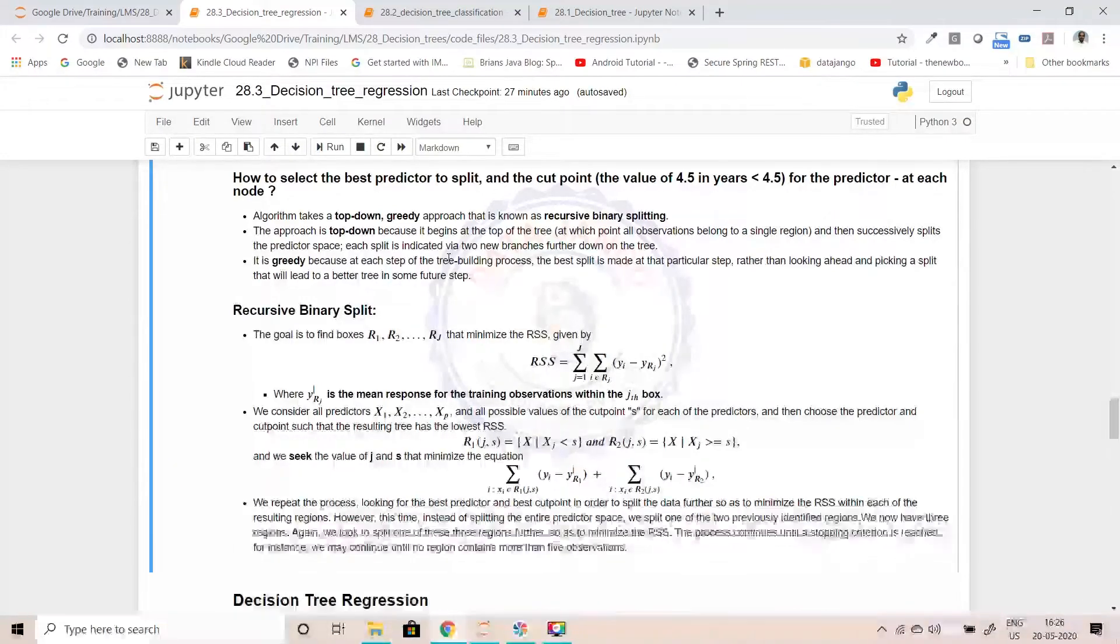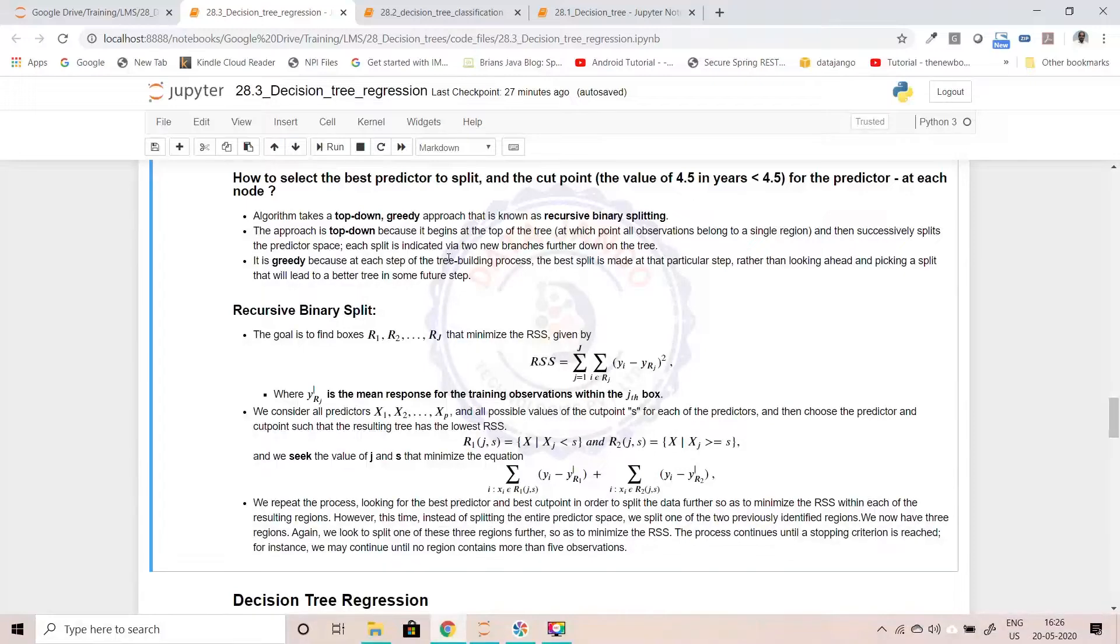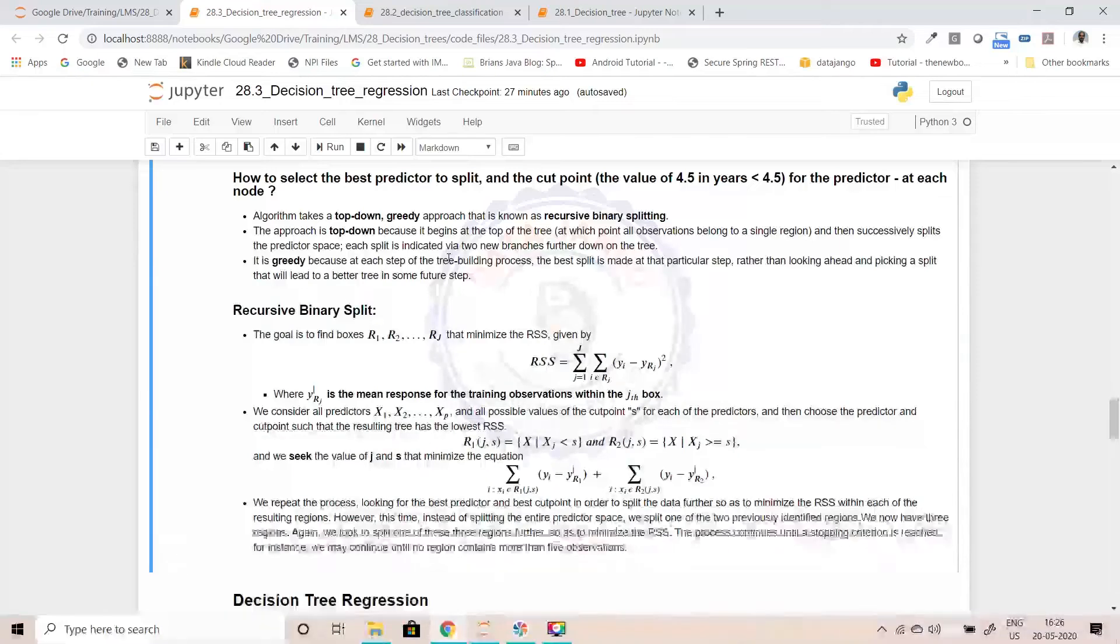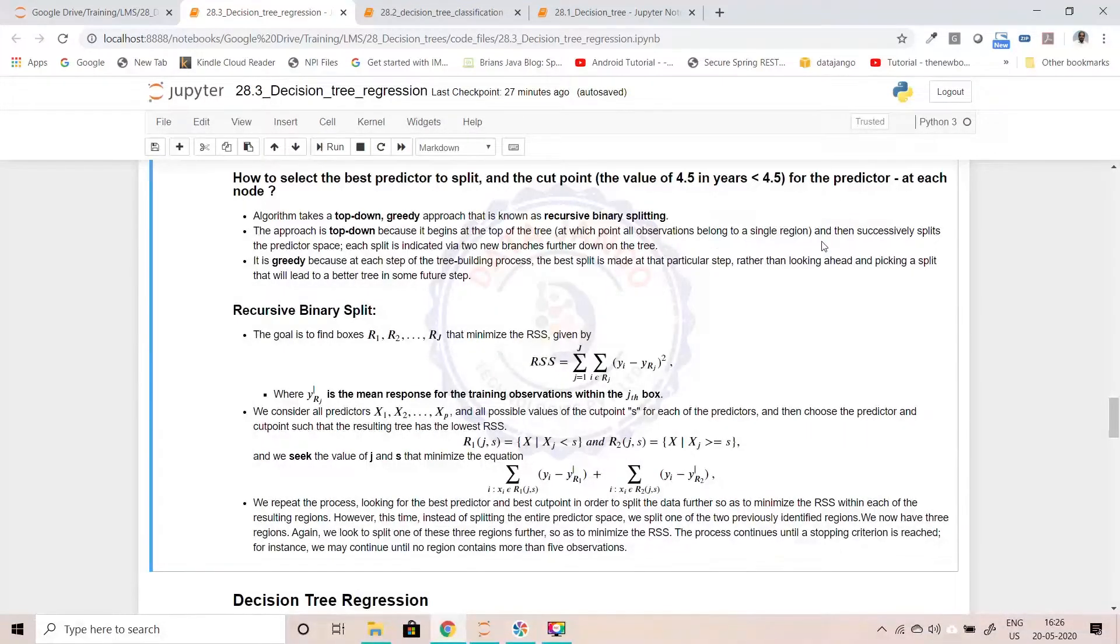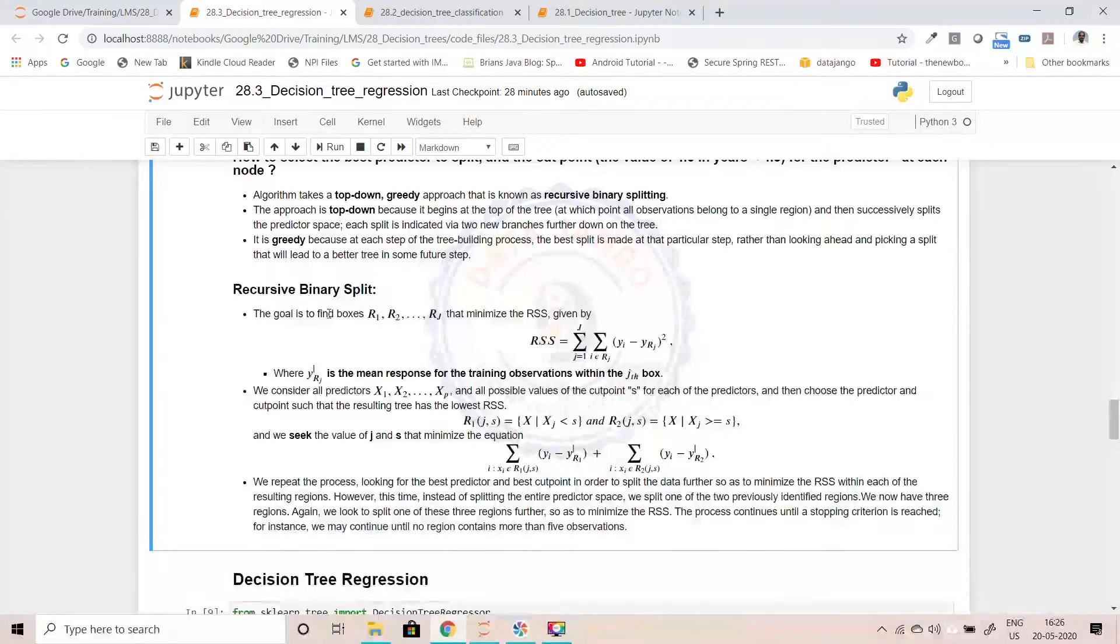We say it is a greedy approach because it makes the split based on the current situation. When it is trying to make the split, how the data got split and how the predictions are, based on that only it is going to make the split. It is not going to look at the further steps and do it. So that's where we call it a greedy algorithm. The approach is called top-down because it begins at the top of the tree and successively splits the data and predicts.